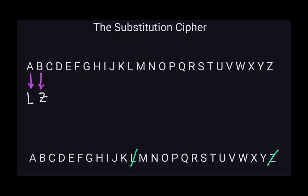However, you can assign a letter to itself — for example, you can transform Z into capital Z again. That is allowed. You just have to cross out that letter at the bottom so it can't be used again in any other mapping. So to summarize: the substitution cipher gives us a way to transform letters into other letters, but it's no longer a shift — it's done arbitrarily.